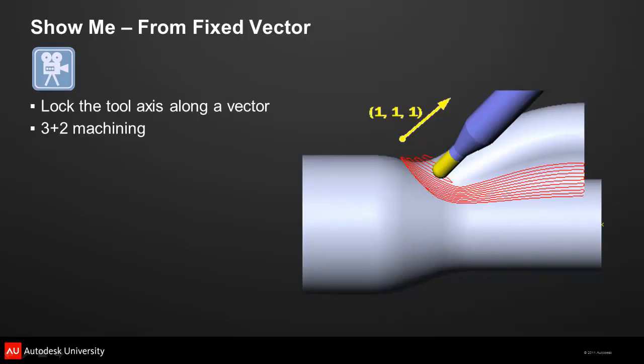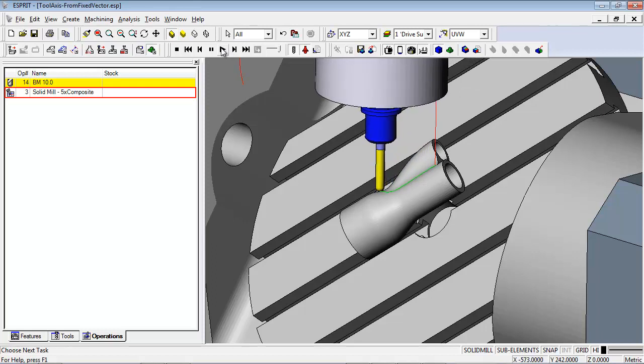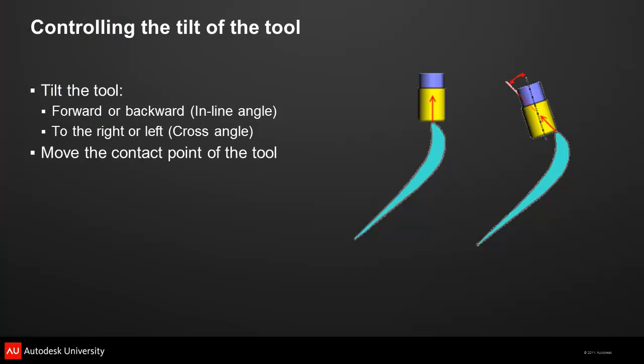The last orientation strategy in the composite function lets you set the tool axis to a fixed vector. This is the strategy you use to produce a 3 plus 2 toolpath. The rotary axes first orient the tool axis to the vector you specify, and then the tool is held in that position throughout the cut. In 5-axis machining, you need to have more control over the tool than a few predefined orientation strategies — you also need control over the sideways and forward tilt of the tool as it travels along the toolpath.